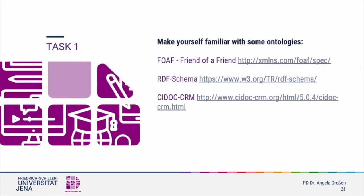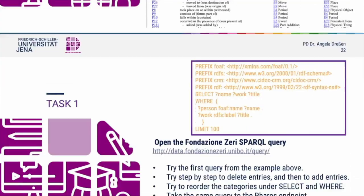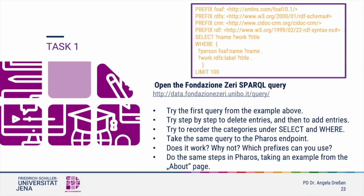Now that you have an idea what a SPARQL endpoint can be used for, you should try on your own. Here are some tasks to get yourself familiar with these endpoints. Before you build a query it is useful to make yourself familiar with the ontology entries and which terms you can use. This is only a snippet of the CIDOC-CRM ontology — go to their page and take a look at the properties and entities. Then go back to the Fondazione Zeri endpoint, try the simple example, manipulate it, add and delete entries, and then take it to the FAROS endpoint.